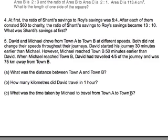Let's read the question first. It says that David and Michael drove from town A to town B at different speeds. Both did not change their speeds throughout their journeys. Very important point. Now David started his journey 30 minutes earlier than Michael. However, Michael reached town B 50 minutes earlier than David. Okay, let's stop there. It's getting a bit overwhelming. Let's draw our timeline first.